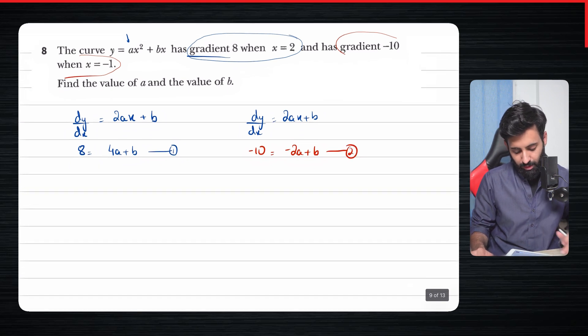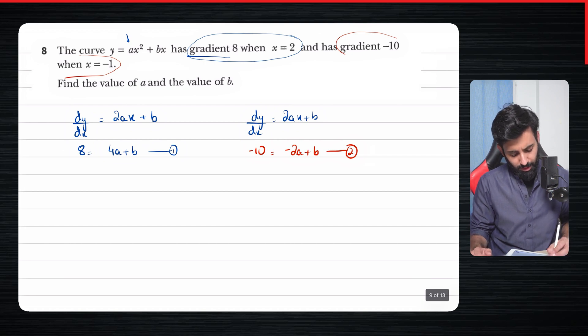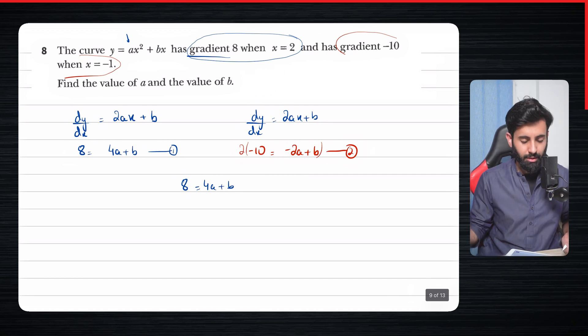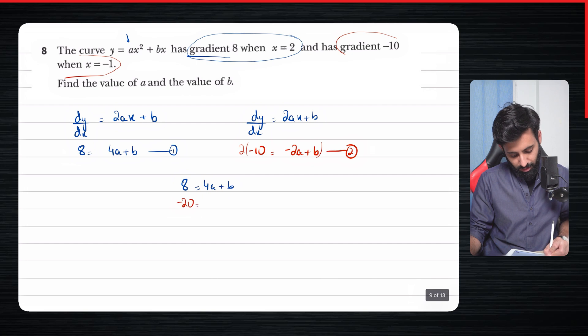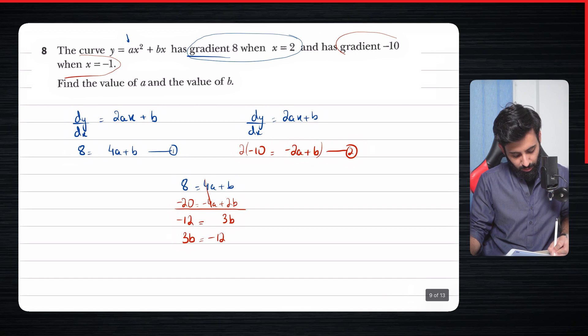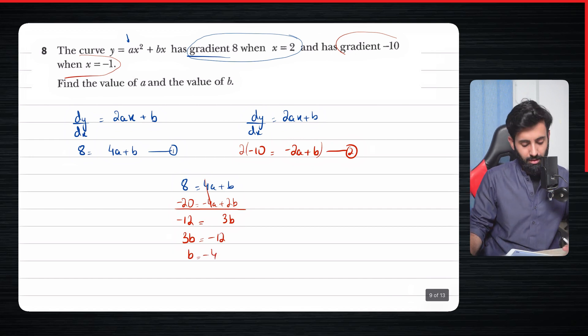So this right here is our second equation. Now you can solve the two equations simultaneously through elimination or substitution, whatever you want. I think I'm going to go with elimination. So I'm going to rewrite the first equation as it is: 8 equals 4a plus b. And what I'm going to do now is multiply this equation by 2 so that this minus 2 turns into minus 4a, and then we can eliminate. So minus 20 equals minus 4a plus 2b. Now let's add the two equations. So 4a minus 4a gets cancelled out. This becomes 3b, and 8 minus 20 is minus 12. So 3b equals minus 12, which means b equals minus 4, which is the correct answer.